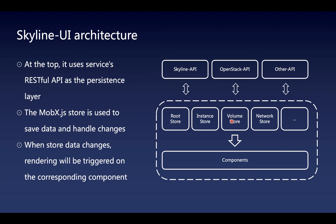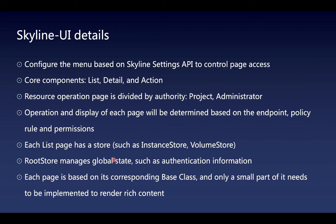the instance store, volume store, and so on. When data in the store changes, the rendering will be triggered on the corresponding component. Here are the Skyline details. Whether the menu is configured depends on the Skyline Settings API, and it realizes the page access control. It has three core components: list, detail, and action.